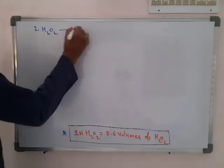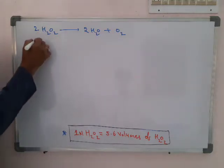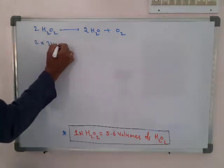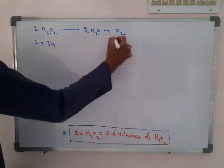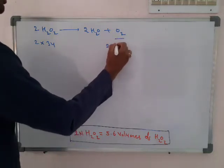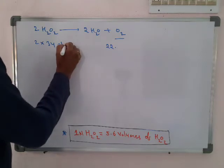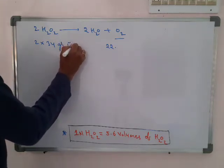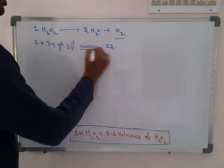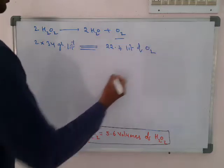Two moles of hydrogen peroxide: in terms of mass, that is 2 × 34 = 68 grams, giving 22.4 liters of oxygen at STP. For one mole, we get 11.2 liters of oxygen. One mole of H₂O₂ is 34 grams per liter. So 34 grams per liter gives 11.2 liters of oxygen.